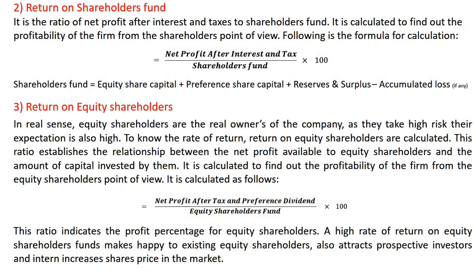The second ratio is return on shareholders fund. It is the ratio of net profit after interest and taxes to shareholders fund, calculated to find out the profitability of the firm from the shareholders' point of view. The formula is net profit after interest and taxes divided by shareholders fund, multiplied by 100. Shareholders fund includes equity share capital, preference share capital, and reserves and surplus, minus accumulated losses.